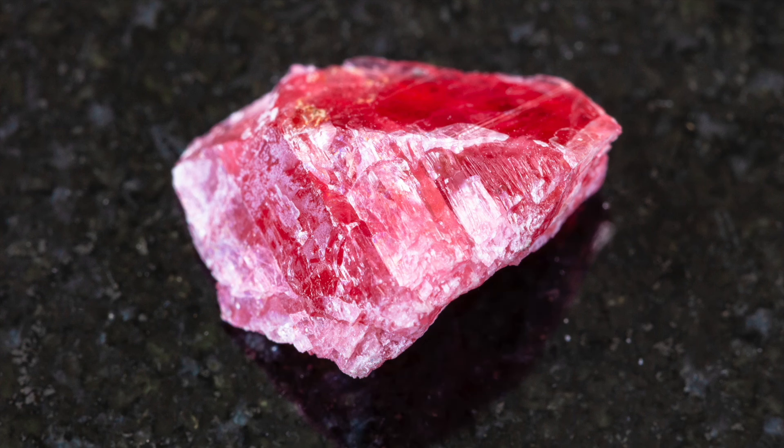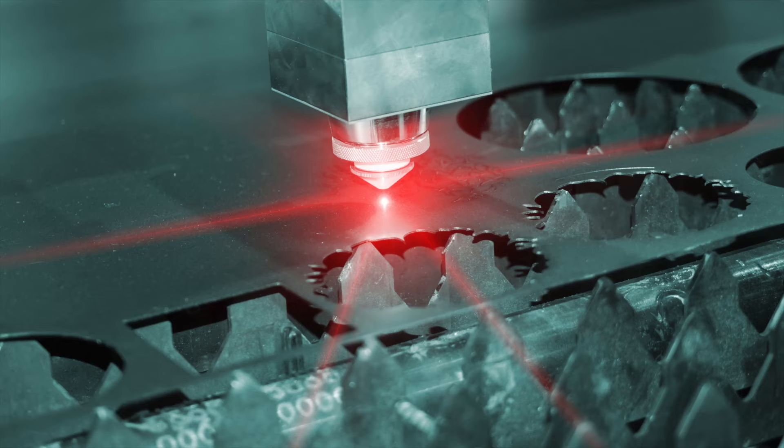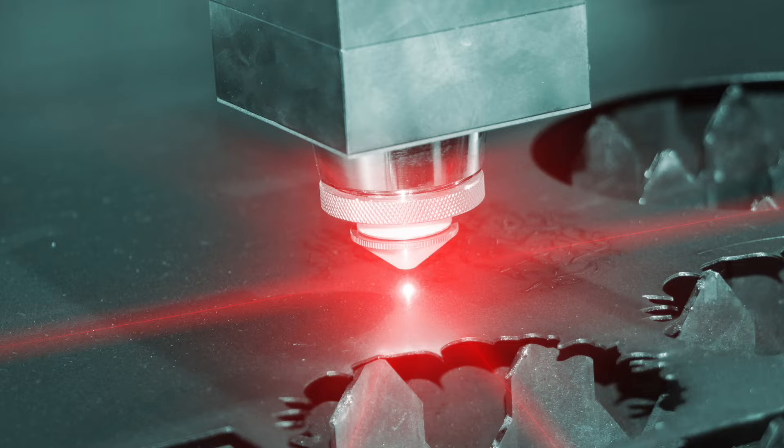He likened it to a ruby. A ruby, in its uncut state, lacks the ability to cut through steel and focus light. When the same ruby, however, is precisely faceted and optimized, it can focus light with precision and cut through metal and other materials effortlessly. Marcel would soon discover what he theorized would actually be true.